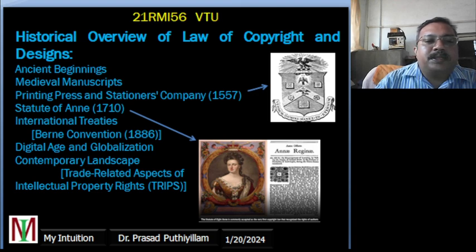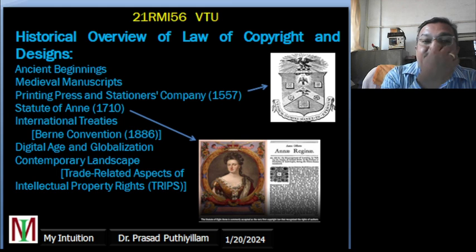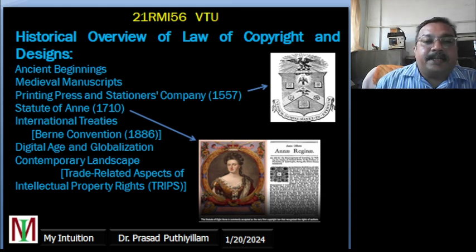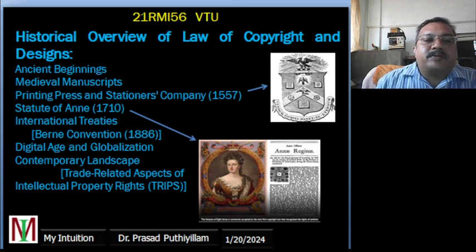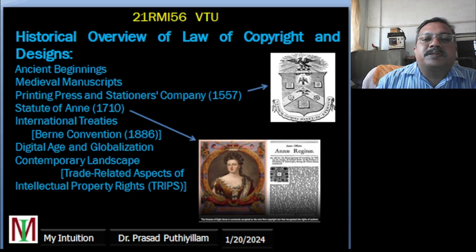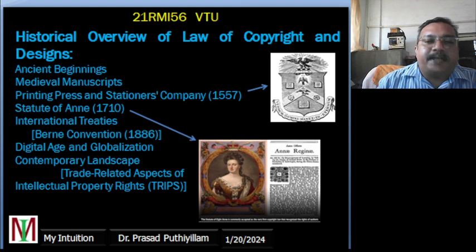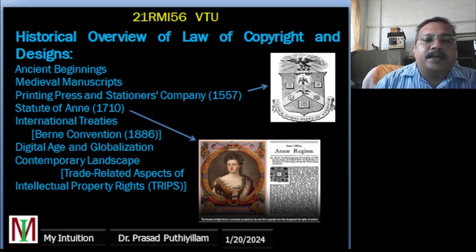The Statute of Anne in 1710 was established in England as one of the first copyright laws, providing authors and publishers exclusive rights to their work for a limited time, creating a legal foundation for protecting literary works. The Statute of Anne is commonly accepted as the very first copyright law that recognized the rights of authors.